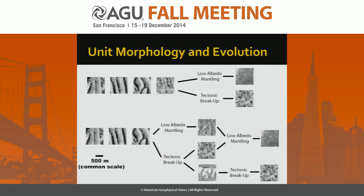Based on this and cross-cutting relationships, we can create a unit morphology and evolution. For a one-step evolution: ridge plains with low albedo mantling leads to low albedo smooth plains, or a tectonic breakup event leads to mottled terrain. For a two-step process: ridge plains with low albedo mantling followed by another mantling leads to smooth plains; or a tectonic breakup event leads to mottled terrain, then mantling leads to low albedo smooth. You could also have two tectonic breakup events, completely destroying the ridge plains into mottled terrain.